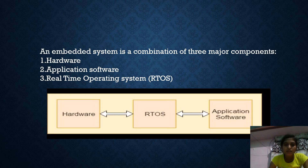Next, we can see the real-time operating system. Examples include airline traffic control systems, command control systems, airline reservation systems, network multimedia systems, robotics, etc.